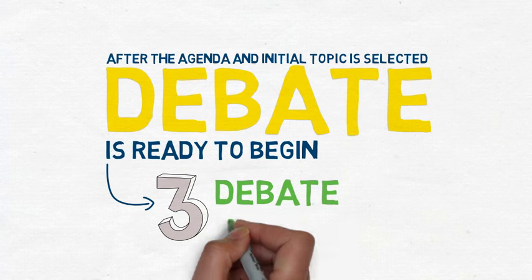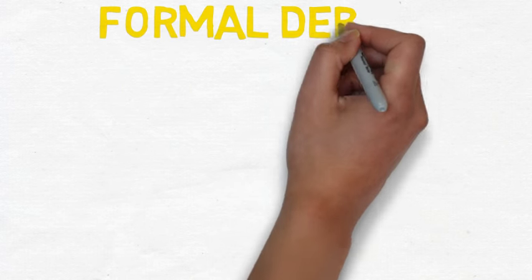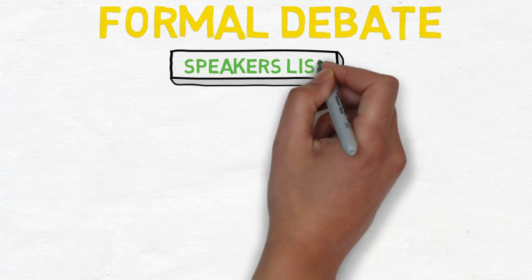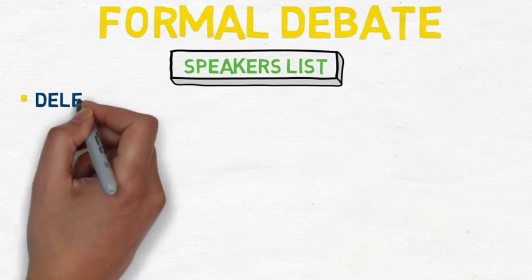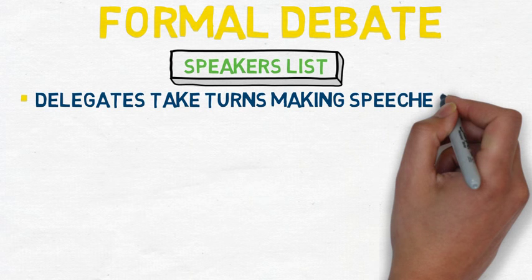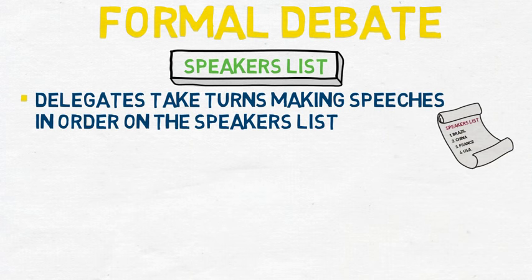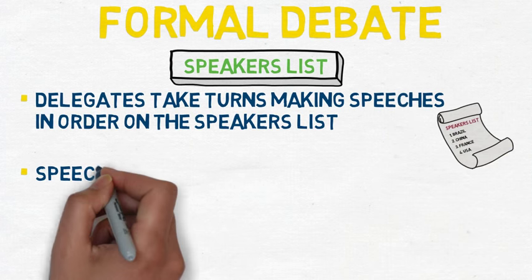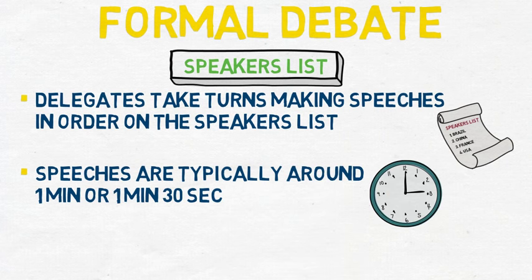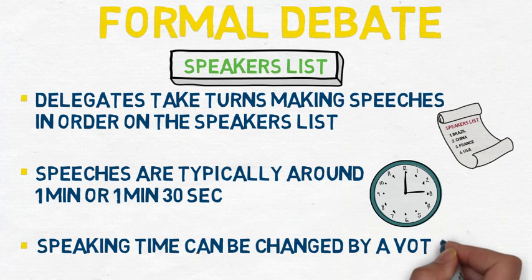Generally, there are three debate formats. The default debate format is formal debate, sometimes called the speaker's list. This is where delegates take turns making speeches in the order they are listed on the speaker's list, as selected by the chair. Speeches are typically around one minute or one minute and thirty seconds, but the speaking time can be changed by a vote from the delegates.